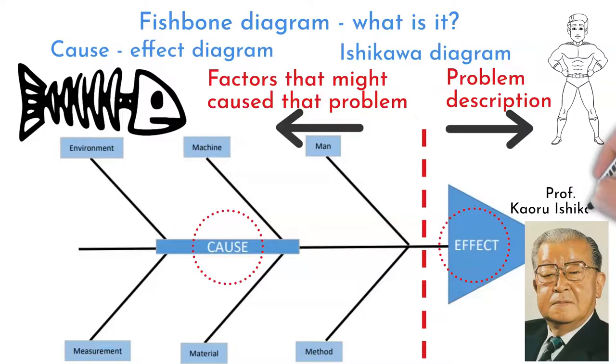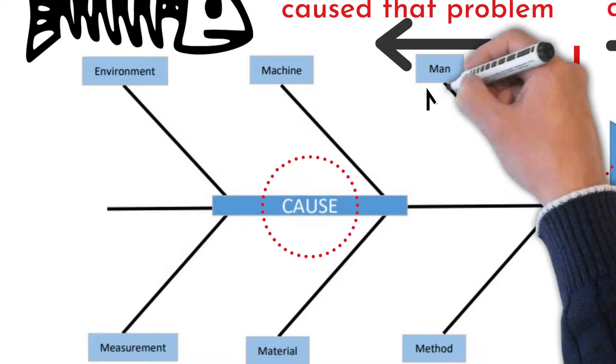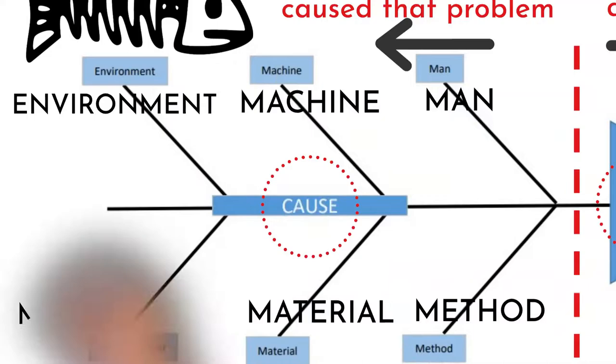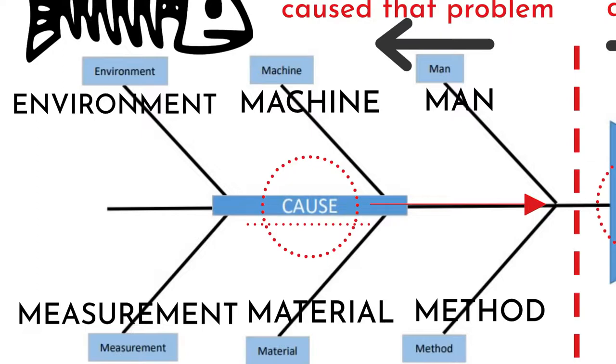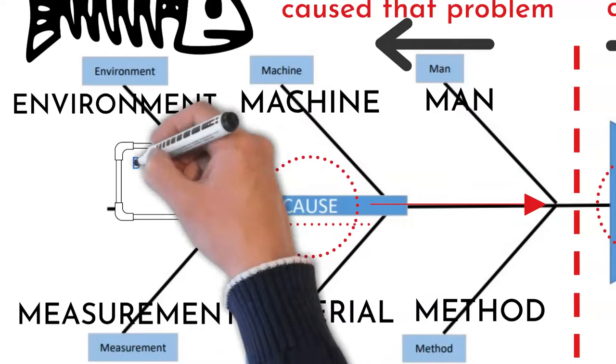Japanese Professor Kaoru Ishikawa was an inventor of this tool. That is why this tool is also named after him. There are six elements of the fish body: Man, method, machine, material, environment, and measurement. These elements can help describe areas that are causing or influencing malfunctioning effect.